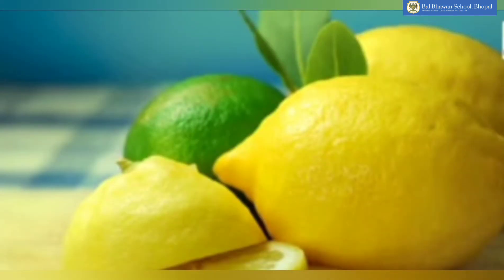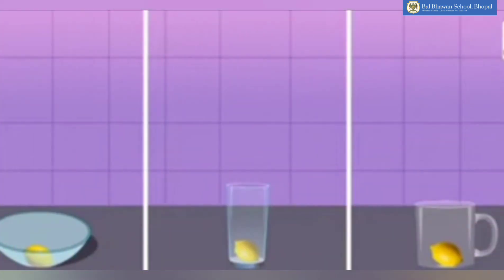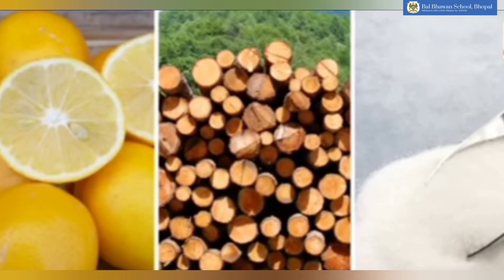Whereas solids even after placing in different shapes of containers cannot be poured like liquids, stays as it is. Anything that has a fixed shape and cannot flow is called a solid.